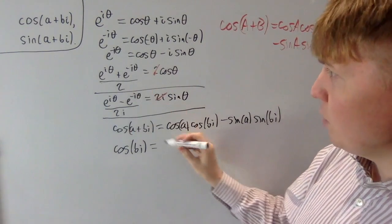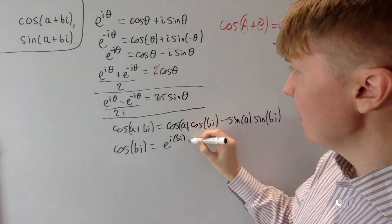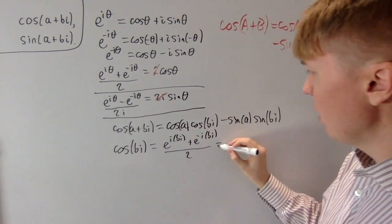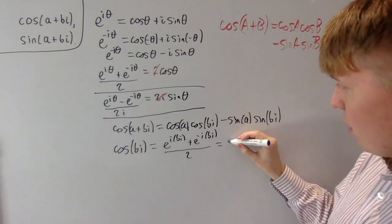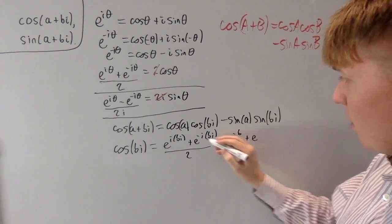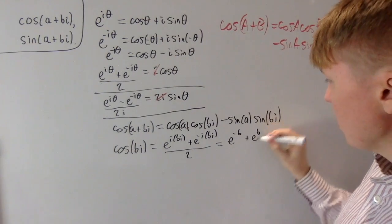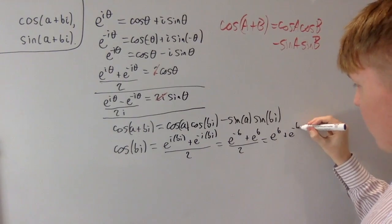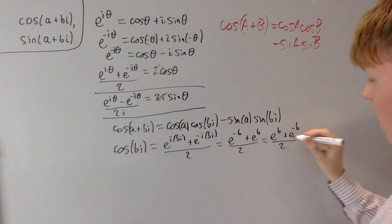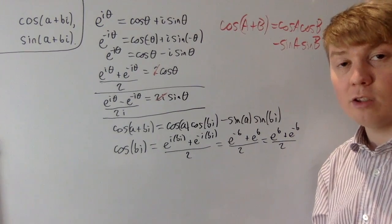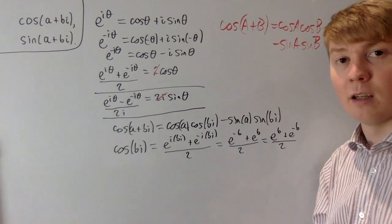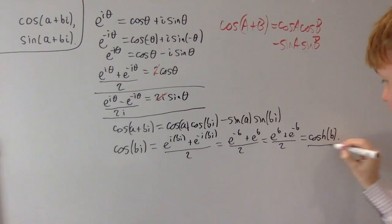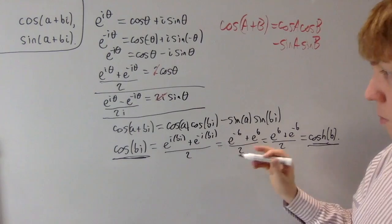To simplify cos of bi, we put it into our exponential definition. Substituting bi for theta gives e to the i times bi plus e to the minus i times bi, all divided by two. Multiplying out, we get e to the minus b plus e to the b, all over two. Rewriting this as e to the b plus e to the minus b over two, this is just the definition of hyperbolic cosine of b. So we can write cos bi simply as hyperbolic cos of b.